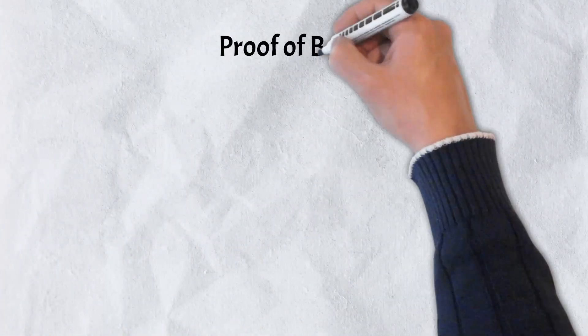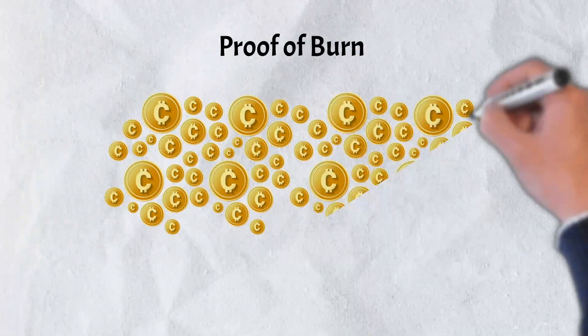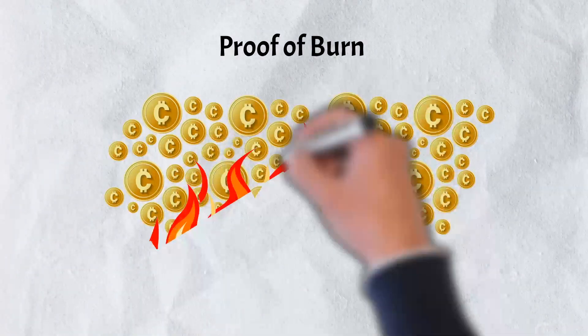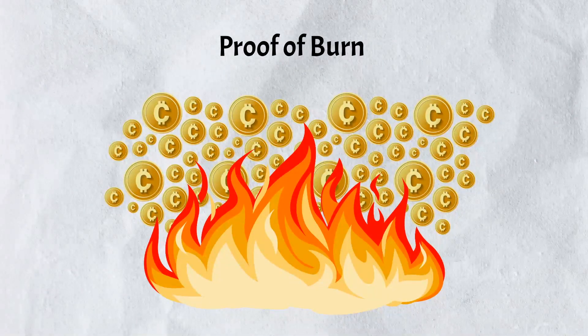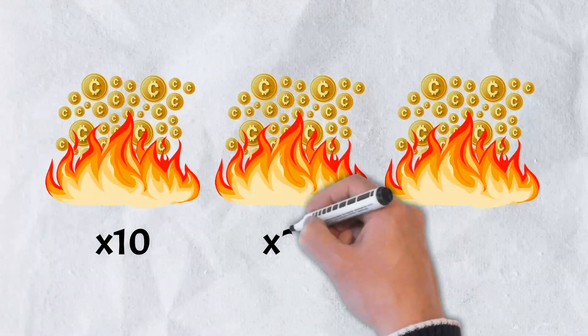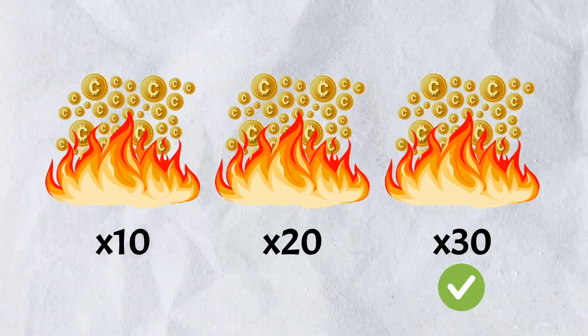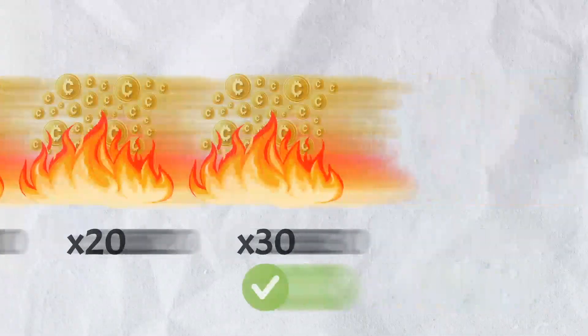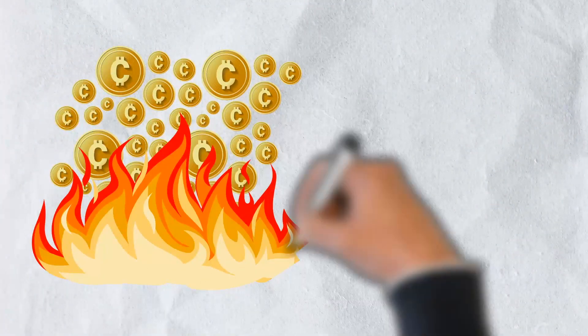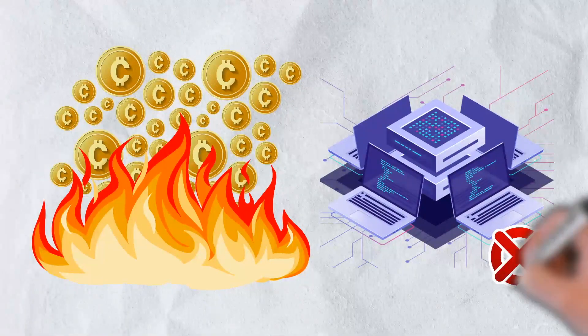Proof-of-burn. Proof-of-burn is a method of obtaining a proportional right to mine new blocks and verify transactions by purposely and permanently destroying tokens. The more tokens a miner burns, the more likely he or she is to be chosen as the next block validator. Miners in a proof-of-burn configuration can use significantly less energy than miners in traditional proof-of-work systems by demonstrating their commitment to the network.